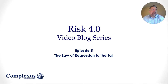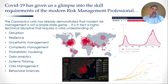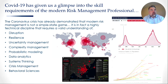Greetings everybody and welcome to the latest episode of the RISC 4.0 video blog series. In this episode we aim to discuss the law of regression to the tail and how it influences risk. As a quick recap, the reason I started this blog was because at the height of the 2020 coronavirus phenomenon, I noticed that a number of advanced risk management concepts were coming to the surface which, collectively, potentially represented the new age curriculum of the modern day risk management profession.